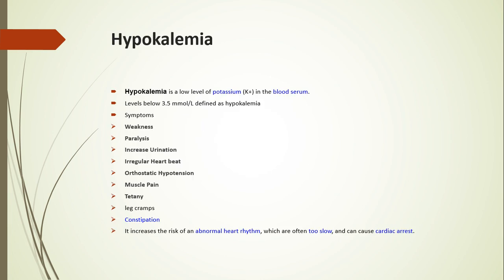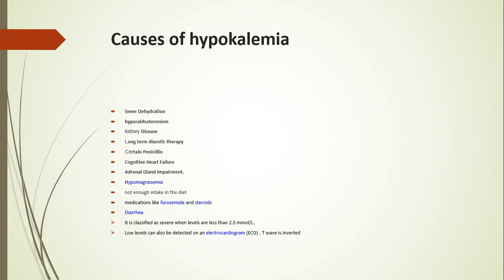Hypokalemia is a low level of potassium in the blood. Symptoms are weakness, paralysis, irregular heartbeat, tetany, muscle pain, constipation, abnormal heart rhythm, and cardiac arrest. Causes include severe dehydration, hyperaldosteronism, kidney disease, long-term diuretic therapy, low magnesium levels in the body, excessive steroid intake, adrenal gland impairment, and diarrhea.